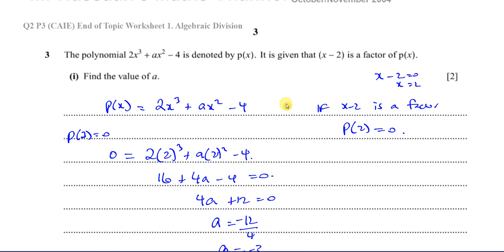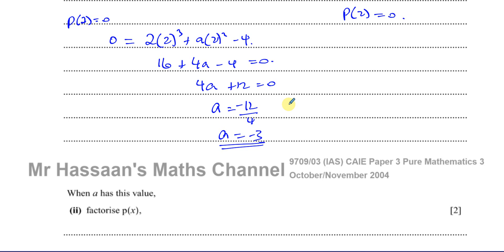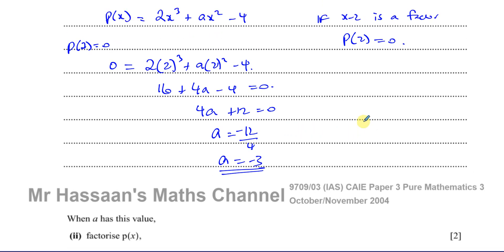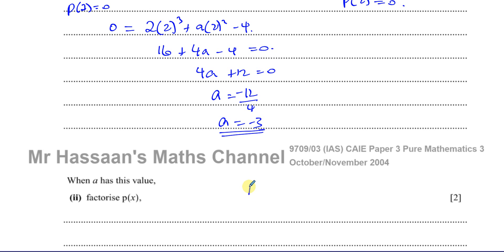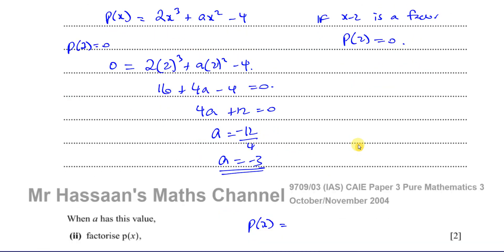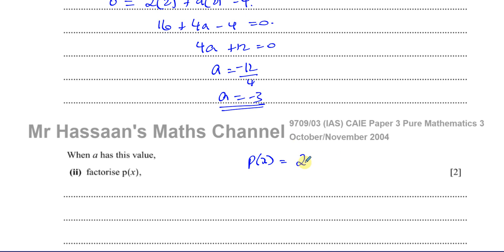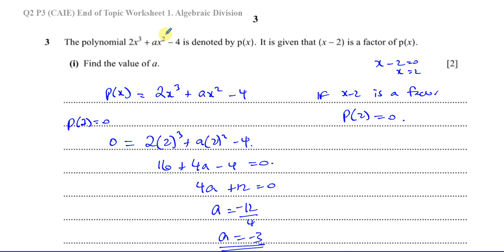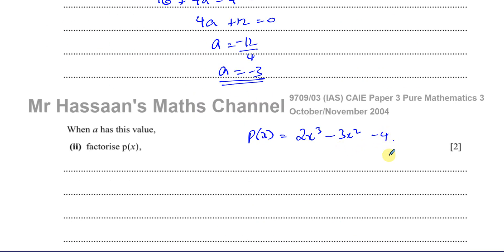Now for part 2: when A has this value, factorize P(x). So we know P(x) = 2x³ − 3x² − 4. We want to factorize this fully. We know that x minus 2 is a factor, so we need to find the quotient when this is divided by x minus 2.